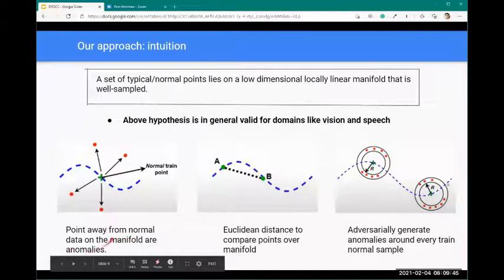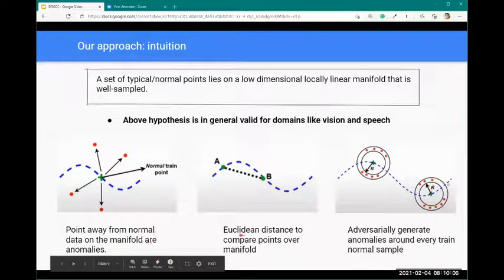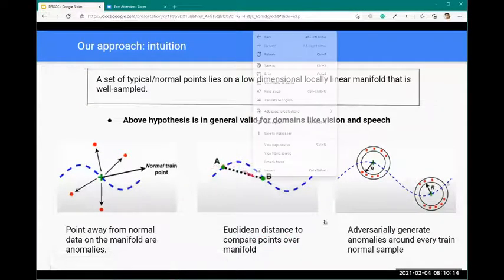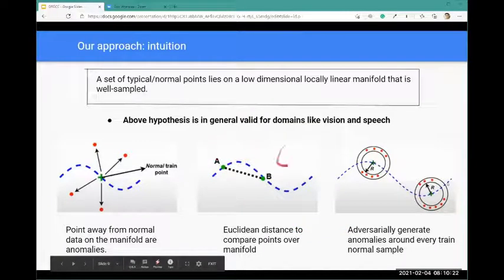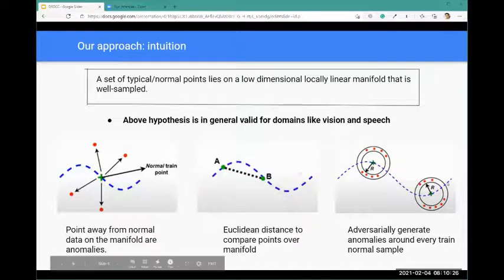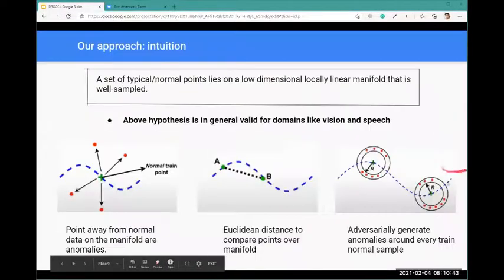Any point that is perpendicularly away from the normal point are anomalies. The green values are the normal points and these red points which are away from the normal point are known as anomalies. Points away from the normal data on the manifold are anomalies. We use Euclidean distance to compare points over the manifold, and we'll adversarially generate anomalies around every training normal sample.